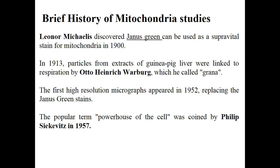Lenore discovered that Janus green can be used as a supra-vital stain for mitochondria in 1900. In 1913, particles from extracts of guinea pig liver were linked to respiration by Otto, referred to as grana. The first high-resolution micrographs appeared in 1952, and the popular term 'powerhouse of the cell' was coined by Philip in 1957.